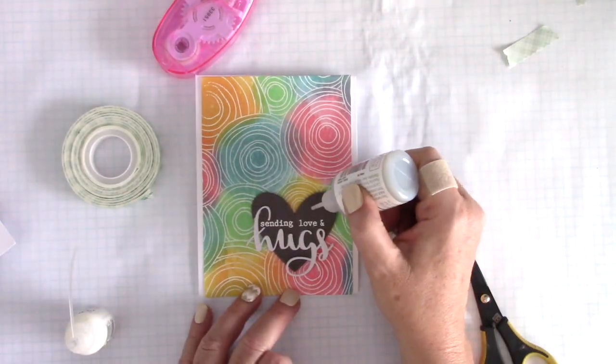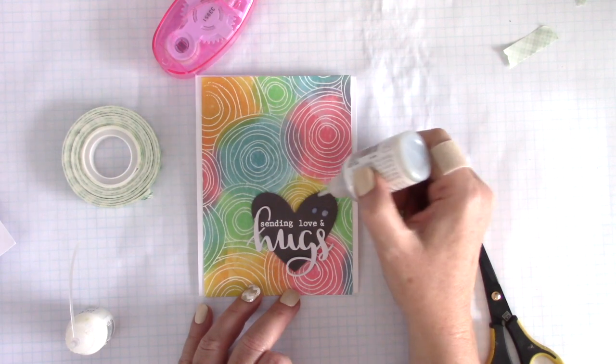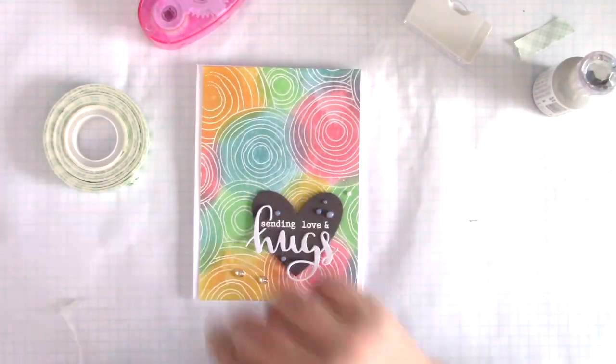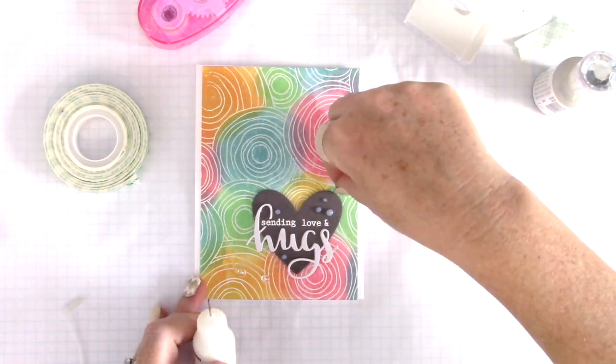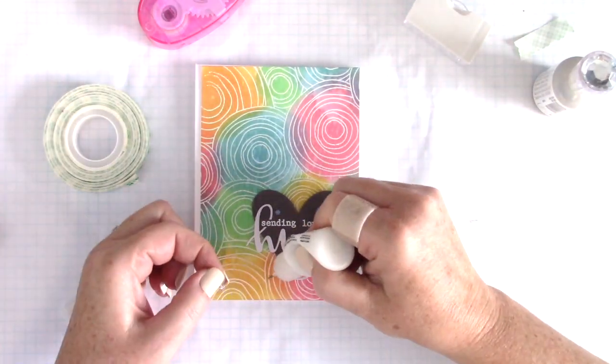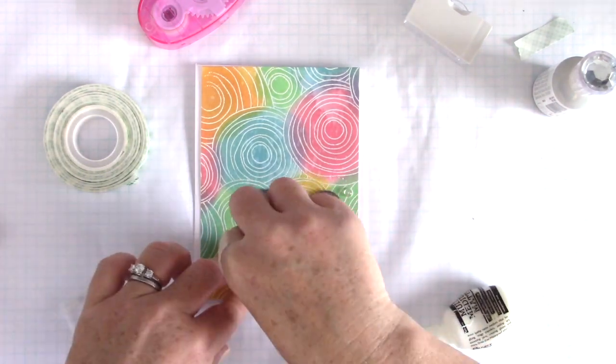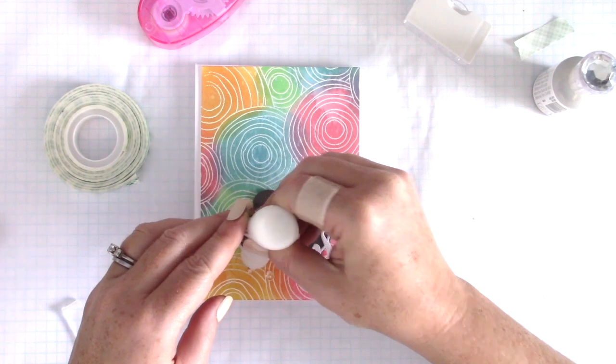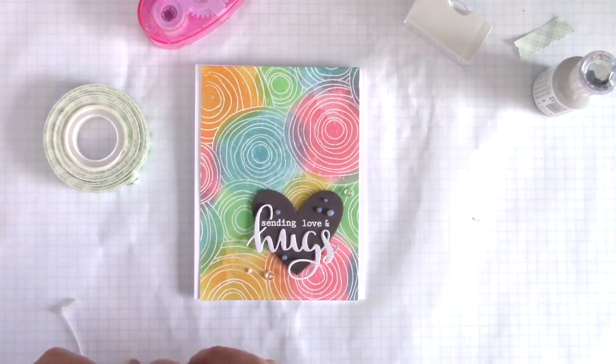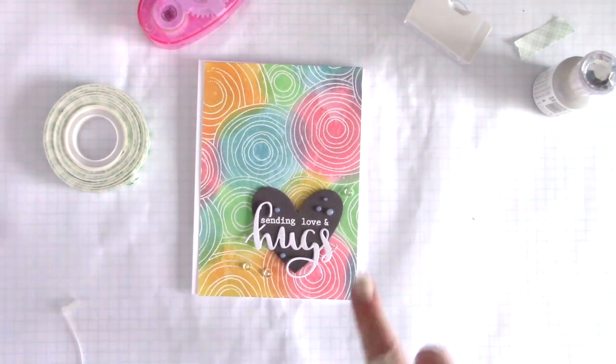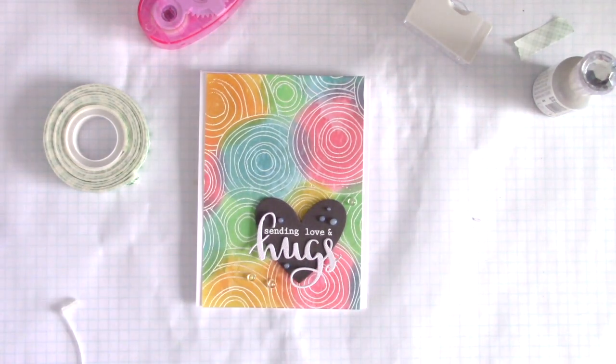Now I have the Nuvo crystal drops—these are the jewel drops, so they are more transparent than opaque, and they dry dimensional as well. I really love those. I am going to take the Ranger Multi Medium Matte again, put a couple of drops on the card itself, and then adhere some Pretty Pink Posh crystal droplets, which I absolutely love the dimension and shine from those as well. And there is my card.